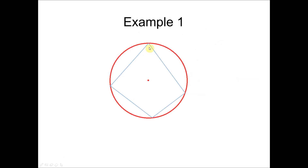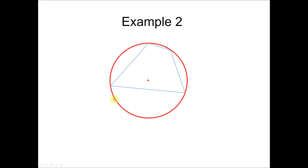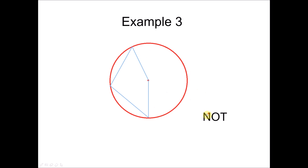Here is example one: a polygon with four sides where all four vertices are at the circumference — this is a cyclic quadrilateral. This second shape also has four vertices all on the circumference, so it is also a cyclic quadrilateral. However, in the third shape one of the vertices touches the center but not the circumference, so it is not a cyclic quadrilateral. In the fourth shape, one vertex is outside the circle, so it is also not a cyclic quadrilateral.